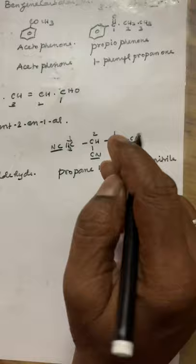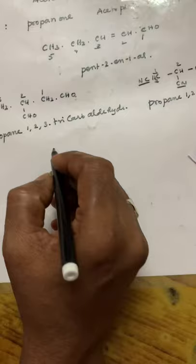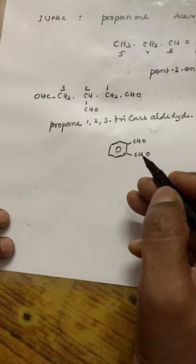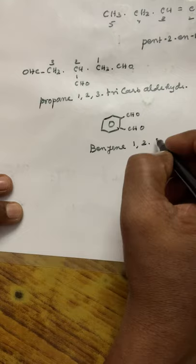In the same way, if CO2H groups are present three times, the IUPAC name is propane-1,2,3-tricarboxylic acid. For a benzene ring with CHO groups at two positions, the IUPAC name is benzene-1,2-dicarbaldehyde.